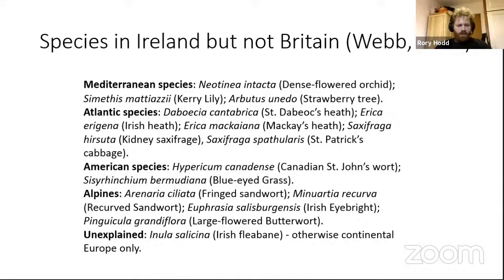That unexplained species is the Irish fleabane, Inula salicina, which only occurs in Ireland around Lough Derg — I think it's only in Tipperary now, though it also used to occur in southeast Galway. It only occurs around this one lake on the River Shannon, nowhere else in Ireland, nowhere in Britain. The question of how it got there is really unexplained — why it's just in that one spot.